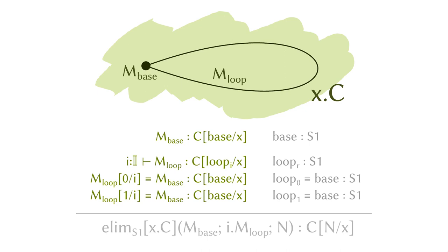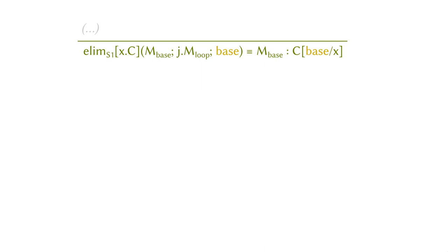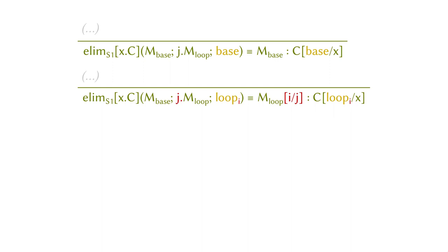Now we have the elimination rule settled. The next one is computation. For the base case, it's not surprising: if the point you want to deal with is the base point, that gives you back the proof you put in for base. The more interesting case is the loop constructor: if the input is loop-i, it gives you the proof for the loop. But we need to do the dimensional substitution, because the loop-i is at dimension i, while when constructing the proof it may be indexed by a different dimension. So we do the dimensional substitution to make sure the dimensions match up.